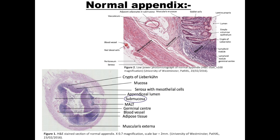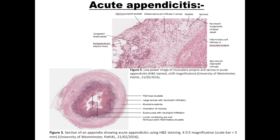The submucosa of the appendix contains many masses of lymphoid tissue, suggesting that the appendix may play a role in the immune system. Acute appendicitis is often thought to be due to luminal obstruction either by impacted hard feces, fecalith, by enterobius worms, or by reactive hyperplasia of the lymphoid tissue.